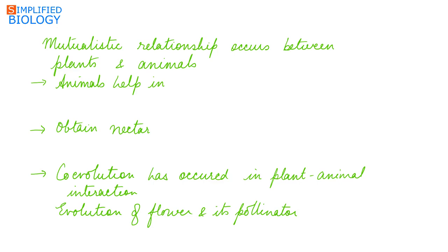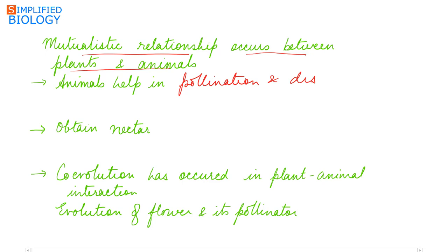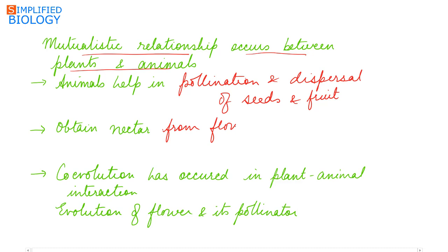A mutualistic relationship also occurs between plants and animals. Animals help in pollination and dispersal of seeds and fruits. In return, the animals obtain nectar from the flowers and also food in the form of fruits.